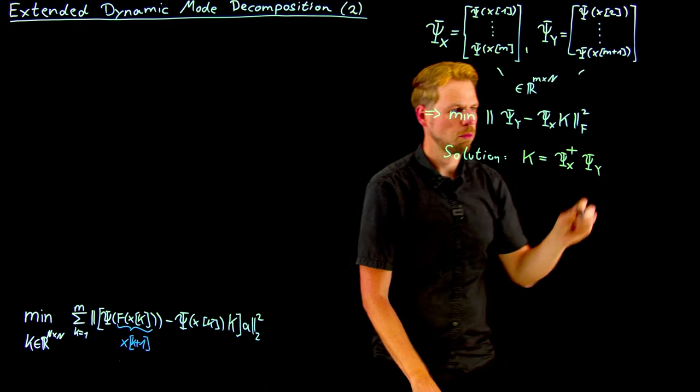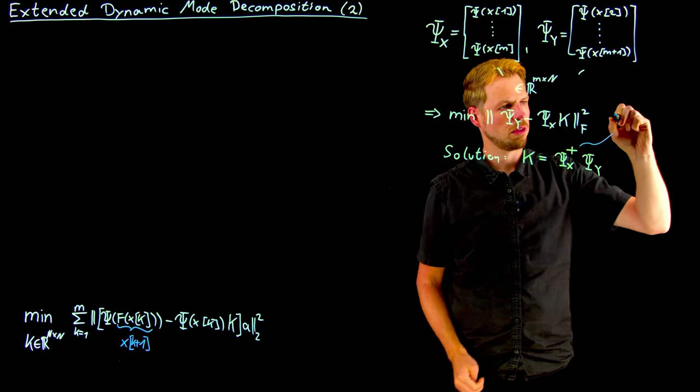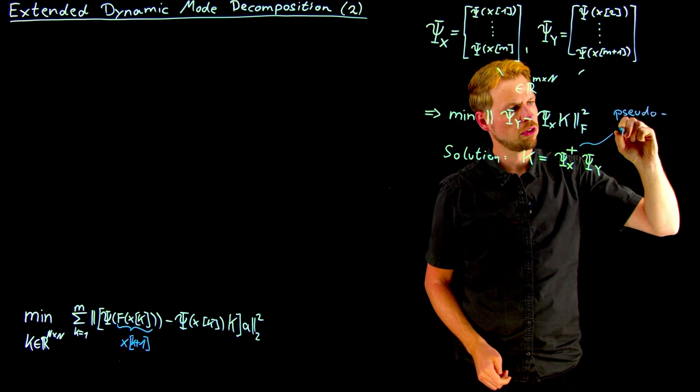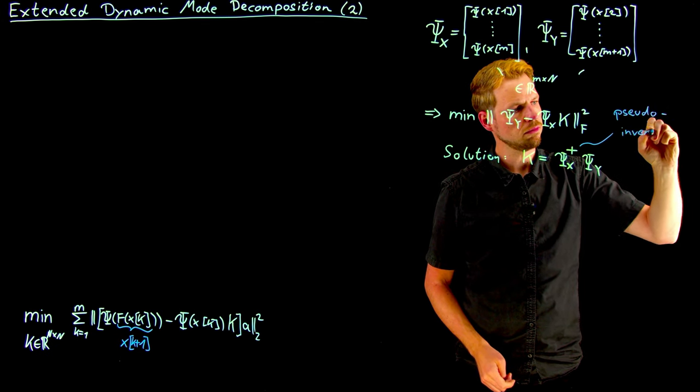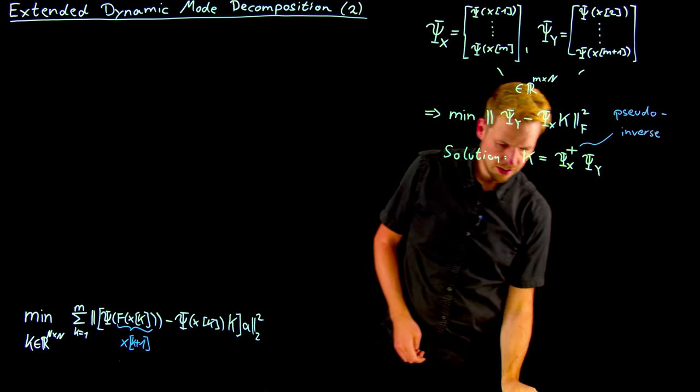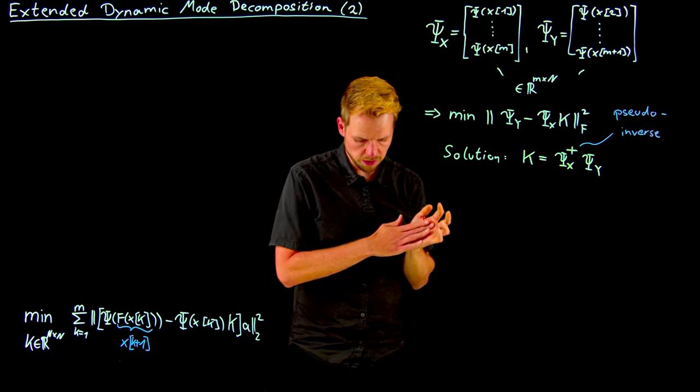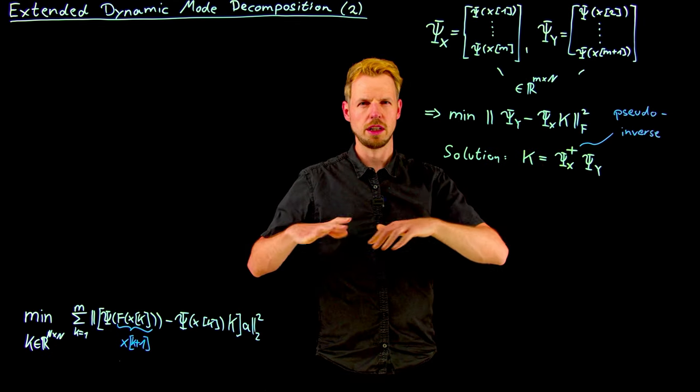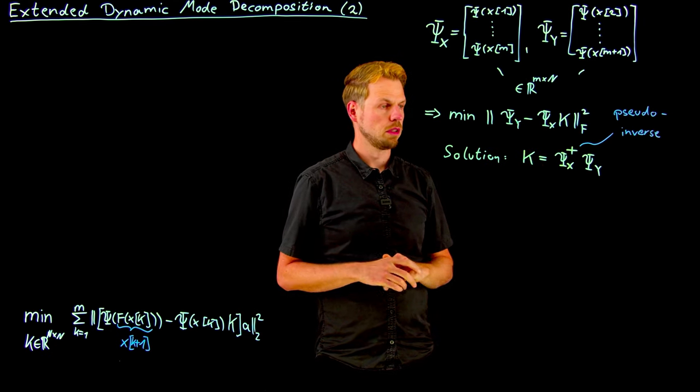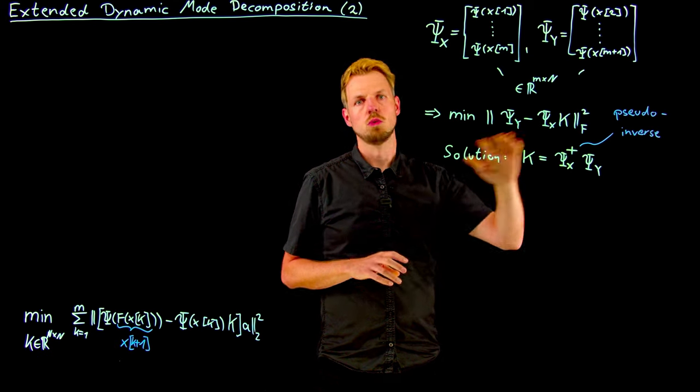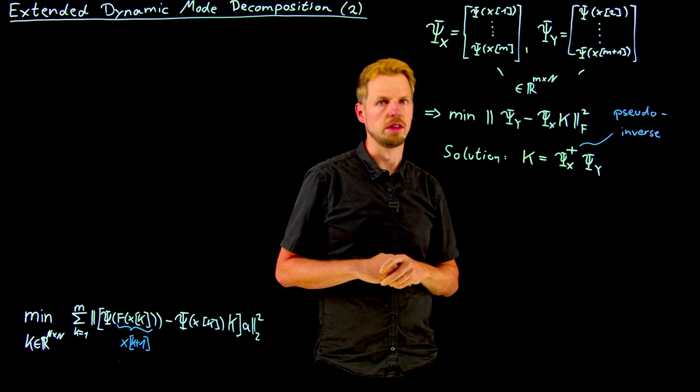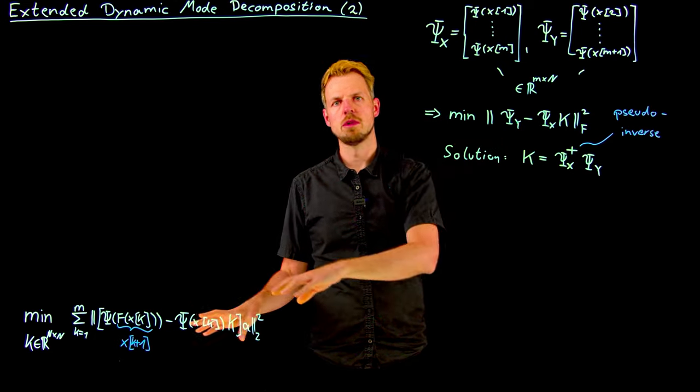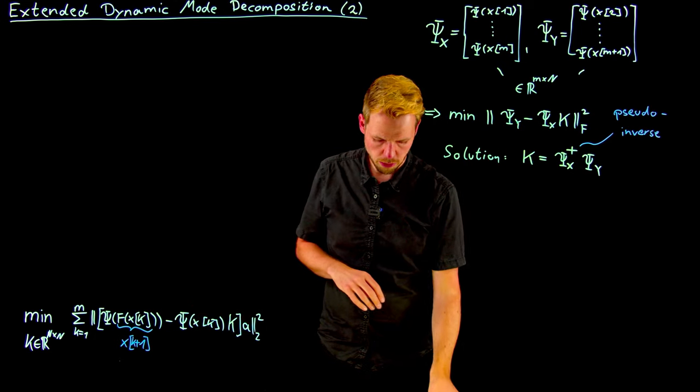So what this plus denotes is the Moore-Penrose pseudo-inverse. So it's a generalization of inverting matrices, which is computed using singular value decomposition. And if you're interested, I can put a link below this video to show where you can learn a little bit more about this. I will also put some references about the specifics, how to derive this optimization problem and how to solve this regression problem.